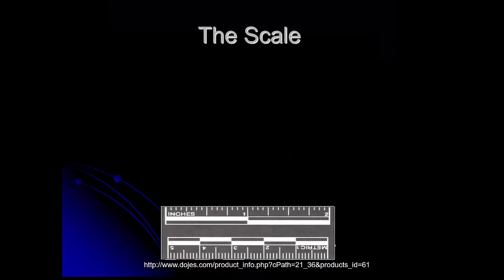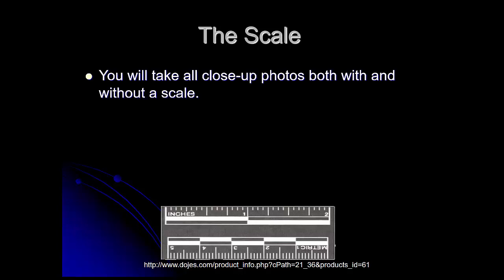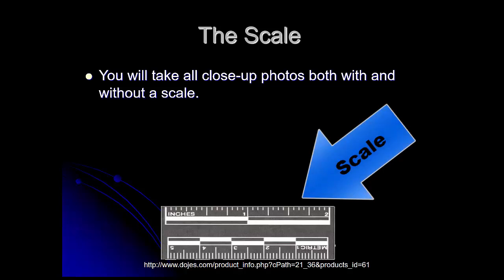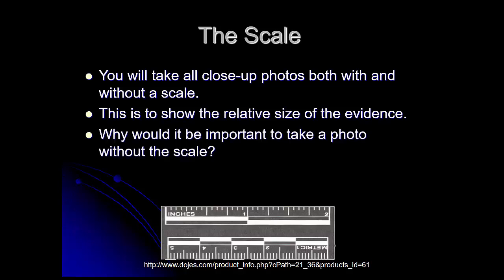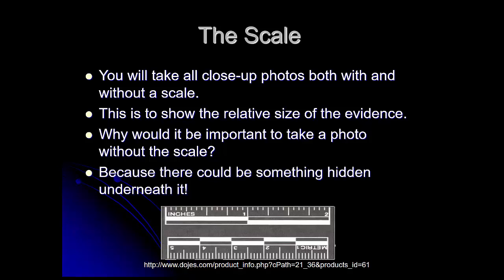A scale is really handy because it lets you give some idea of the size of the object you're photographing. All your close-up photos should be taken both with and without a scale. If you look at the bottom of the screen, you can see an example scale that has both English and metric measurements — this shows the relative size of the evidence. Back in the day, police photographers used to use a dollar bill, a quarter, or a pencil next to the evidence to show relative size. You always want a photo with a scale, but it's also important to take one without it.